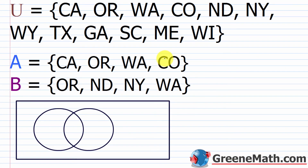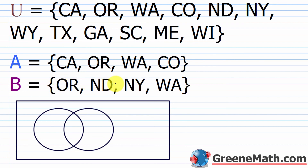Let's take a look at another one. Our universal set contains California, Oregon, Washington, Colorado, North Dakota, New York, Wyoming, Texas, Georgia, South Carolina, Maine, and Wisconsin. Set A is a subset containing California, Oregon, Washington, and Colorado. Set B is a subset containing Oregon, North Dakota, New York, and Washington. Filling in the Venn diagram, what A and B have in common is Washington and Oregon, which go in the overlap section.